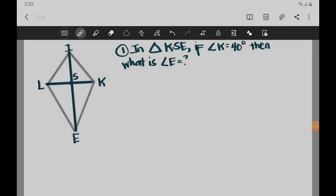Today, we're going to discuss solving problems involving kites. So number one, we have in triangle KSE, if angle K is equal to 40 degrees, then what is the measure of angle E?